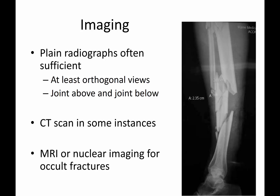From an imaging perspective, plain radiographs are often sufficient for many fractures, at least certainly in long bones. You want to get at least orthogonal views — that is, an AP and a lateral. For diaphyseal fractures, you also want to carefully look at a joint above and a joint below. For instance, an angulated fracture of the ulna in the forearm can cause the radius to dislocate from the radioulnar joint and the radiocapitellar joint at the elbow — and you may not see that if your film doesn't clearly include both joints.